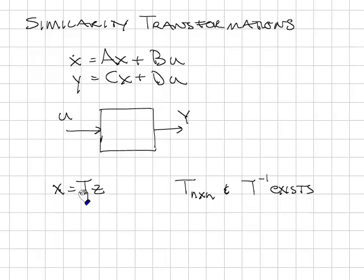X, the old state, is equal to T times Z. In order for this math to work out, T will need to be n by n, where n is the number of states, and T needs to be invertible. The inverse needs to exist.